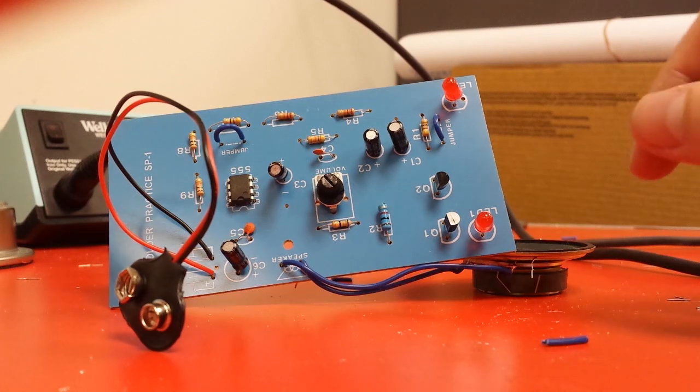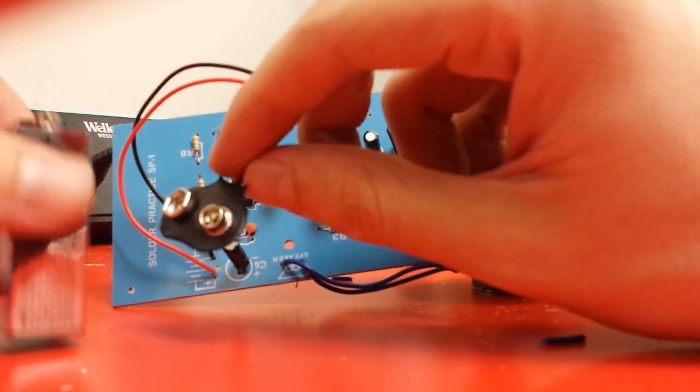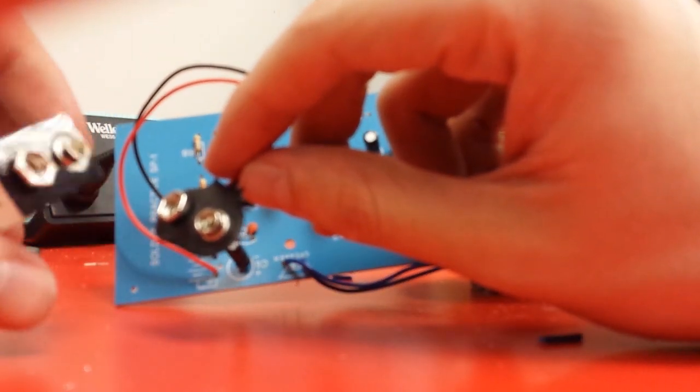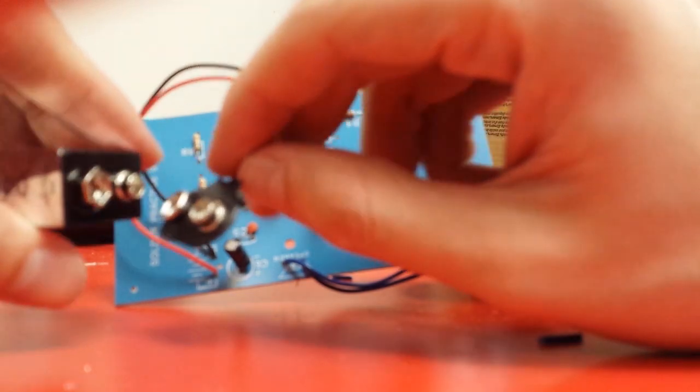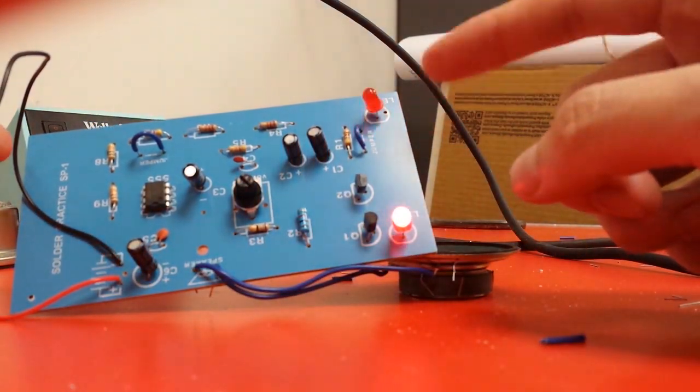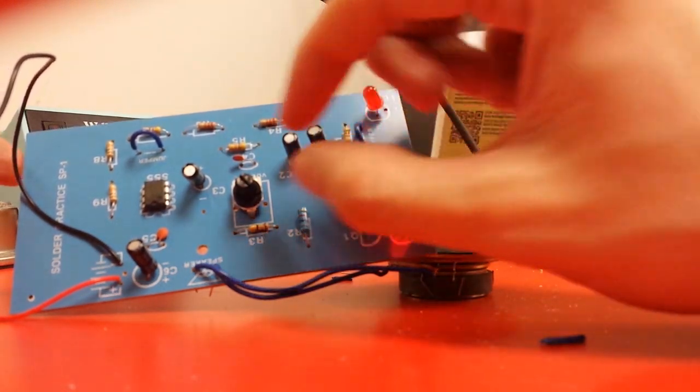So we're going to go ahead, take this battery snap, take a battery, nine volt battery. You're going to connect the big side to the little side and the little side to the big side. You should see that both LEDs toggle back and forth and the siren goes back and forth between two tones.